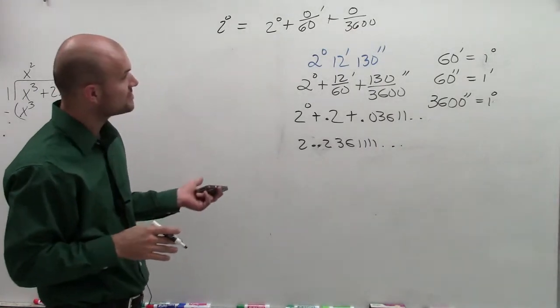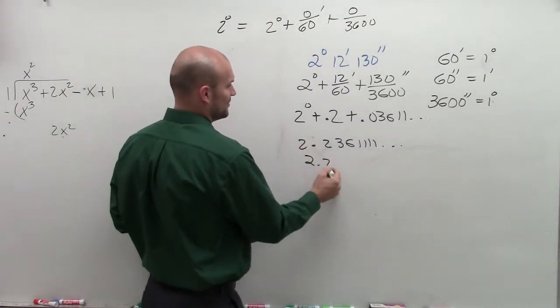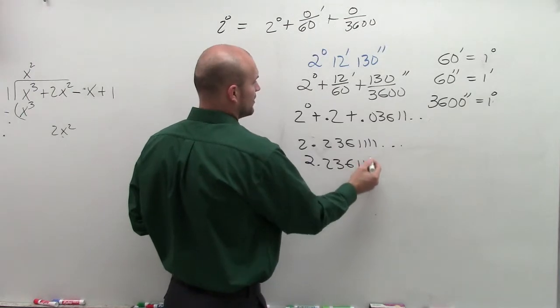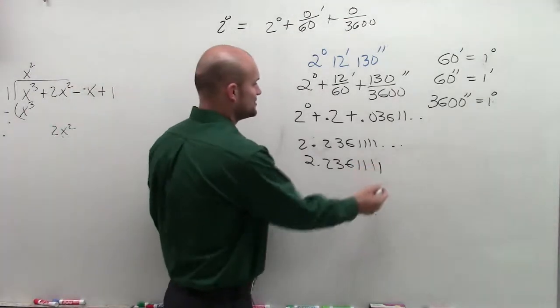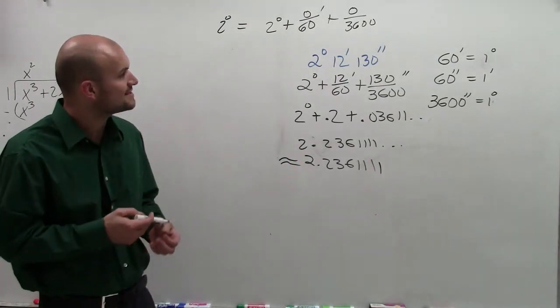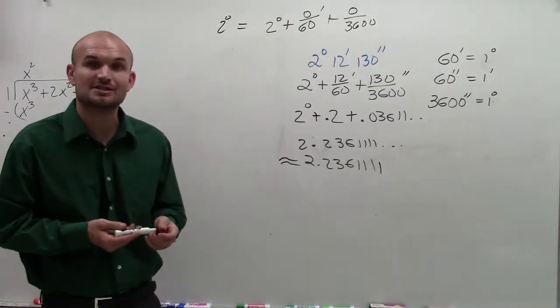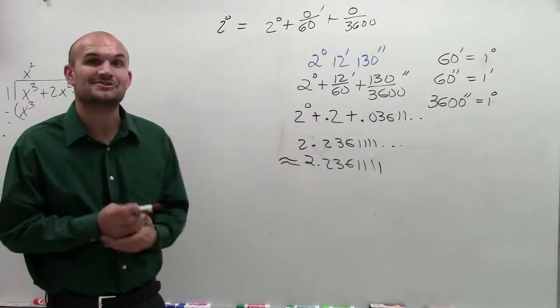So there we go, ladies and gentlemen, that's how, geez, two point, right? It's just 2.236111. So there you go, that's how you are going to figure out, approximate your answer for this ending solution. So just make sure you put it over 60 or 3,600 for your seconds and minutes and then add them up together and there's your answer.